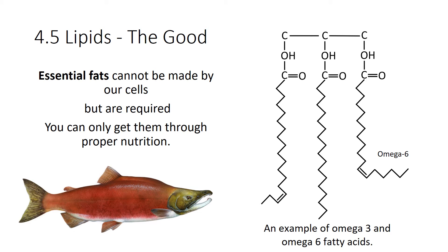Essential fats are things like omega-3s and omega-6s. They're required for our cells to function, but we can't make them — so like essential amino acids and essential vitamins, we must get them through our diet. The term omega-3 and omega-6 comes from alpha and omega — omega being the last. When you look at those long chains of fatty acids, the very last one: if you count three carbons up, that's an omega-3; if you count six carbons up, you find your double bond, and that's an omega-6.